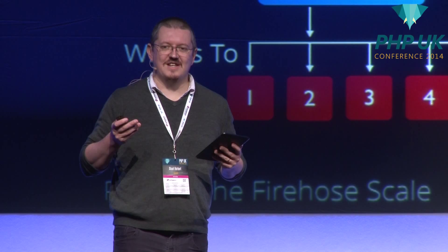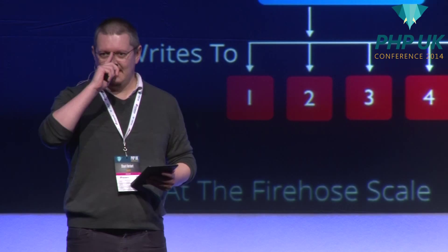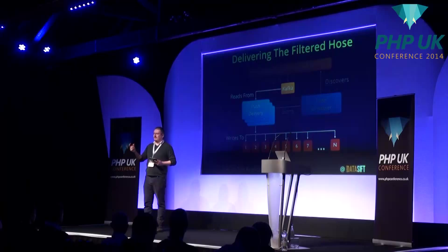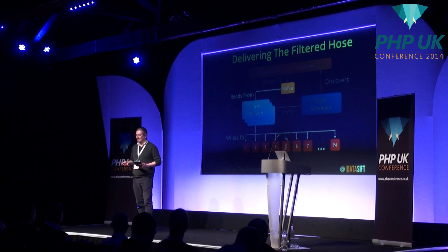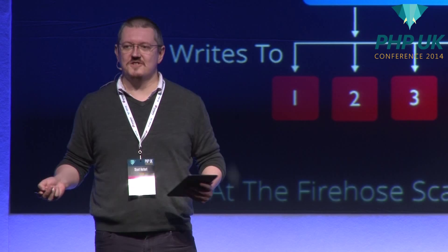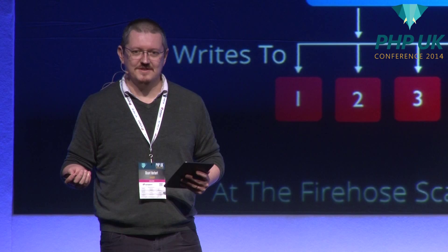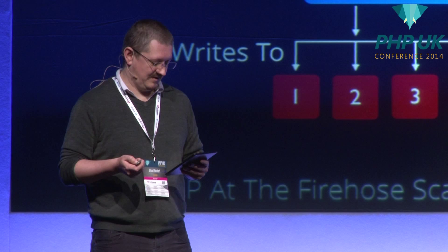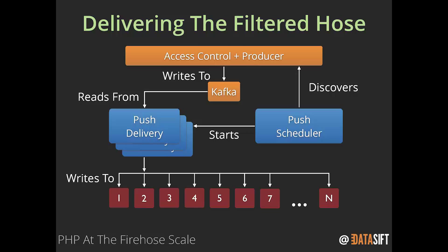We can link this back to Joe's keynote this morning about overcoming barriers. Receiving a firehose is difficult - it requires very reliable code, very fast code. A filtered hose is smaller than a firehose, but for a customer it's probably still the biggest stream of data they've ever seen. So what we've done is we've reached out to our customers and learned how to put data into their systems so that the data's just there - as far as they're concerned, the data just appears in MySQL. It makes life easy for customers, and PHP is a key part of achieving this. This part of the architecture is the load part of ETL - only we're not loading it into our own databases, we're loading it into our customers'.